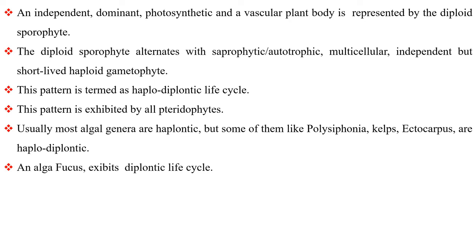An independent dominant photosynthetic and vascular plant body is represented by the diploid sporophyte. The diploid sporophyte alternates with a saprophytic or autotrophic multicellular independent but short-lived haploid gametophyte. This pattern is termed the haplodiplontic life cycle and is exhibited by all pteridophytes. Usually, most algal genera are haplontic, but some of them like Polysiphonia, Kelps and Ectocarpus are haplodiplontic. The alga Fucus exhibits a diplontic life cycle.